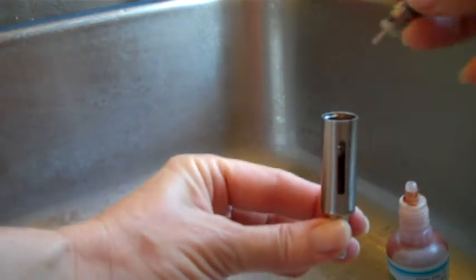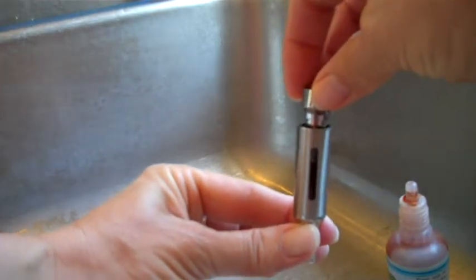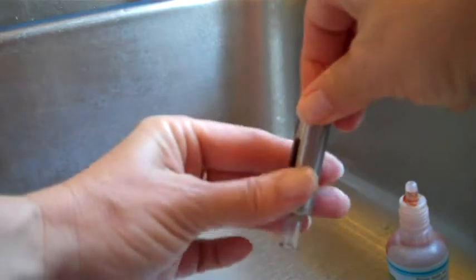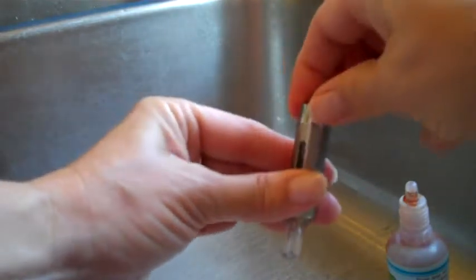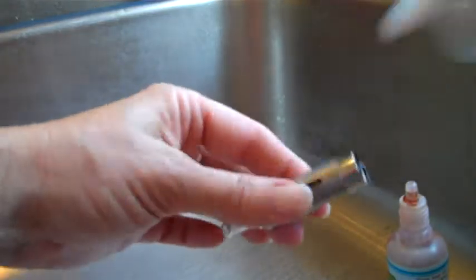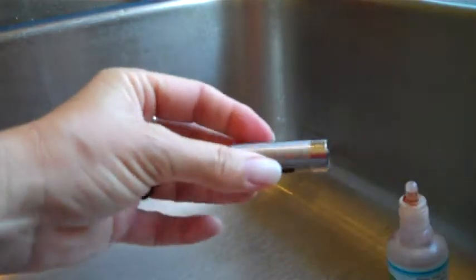Then we take our core and base and put back on. Now typically whenever I put this back together, there's a little bit on the edge, a little bit of juice on the edge. Just take yourself a paper towel and wipe that off and you're good to go.